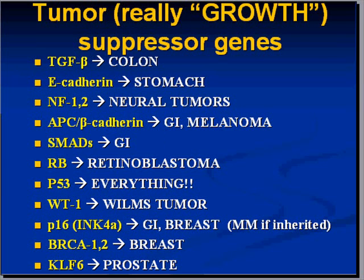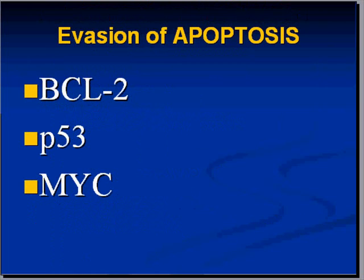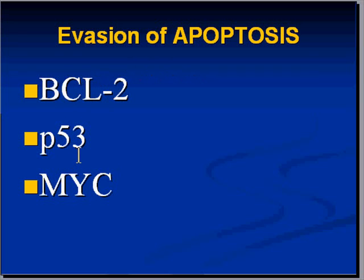We talked about the concept of apoptosis, and if apoptosis is interfered with — or the proteins which normally control and regulate apoptosis are mutated to become oncogenes — and cells normally aren't killed when they should be, that leads to cancer. Evasion of apoptosis is a very key factor in carcinogenesis. The BCL2 gene, when mutated, results in evasion of apoptosis and is therefore a factor for carcinogenesis — this was first demonstrated in a B-cell lymphoma. P53 and the MYC family of oncogenes are also involved with apoptosis.